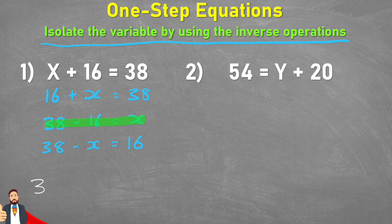So if we write it again at the bottom, 38 minus 16 equals x. Now we can solve to find x. 38 subtract 16 is 22. So 22 equals x, or x equals 22.